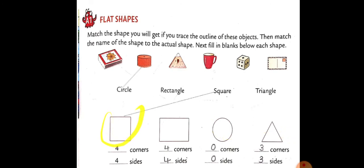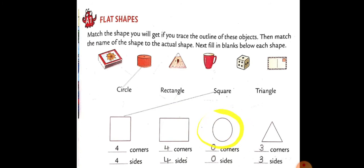Sides means the straight lines of a shape; corner means where two sides meet. So, a square has four corners and four sides. Rectangle has four corners and four sides. Circle has zero corners and zero sides. And triangle has three corners and three sides.